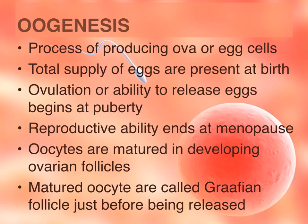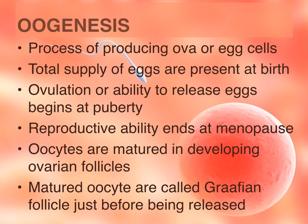Oogenesis is the process of producing ova or egg cells. In females, all of the eggs they will ever have are already present at birth, meaning the egg cells form while the female is still in the womb. At puberty, they start releasing those eggs — a process called ovulation. At menopause, they stop releasing eggs, either because the eggs are no longer viable or they have run out, ending the ability to have children.